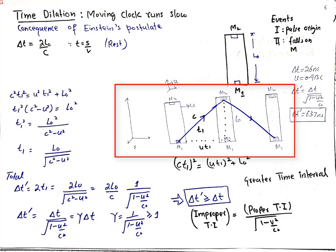Performing the geometric calculation using the Pythagorean theorem: the hypotenuse squared equals base squared plus perpendicular squared. The distance covered by light in time t1 is the hypotenuse c*t1, so c²t1² = u²t1² + L-naught². This gives t1²(c² − u²) = L-naught², and therefore t1 = L-naught / sqrt(c² − u²).